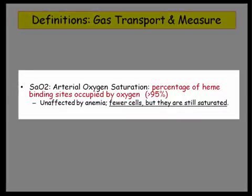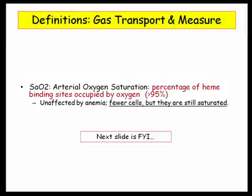Let's move on to the oxygen saturation. Pretty straightforward. It measures the percentage of heme-binding sites occupied by oxygen. Under normal circumstances, that value is greater than 95%. The key point, it is not affected by anemia. There are fewer cells, but the cells which are present still bind oxygen just fine.